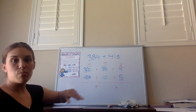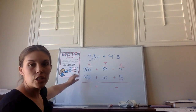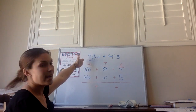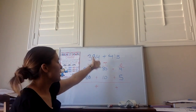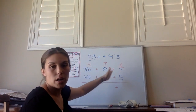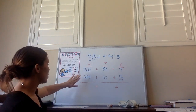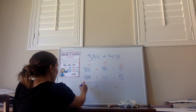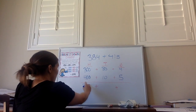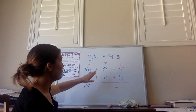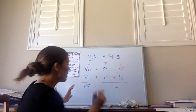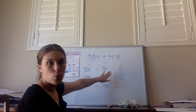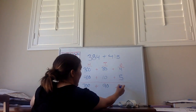Once I've broken up each number into expanded form, this is what it will look like. Our next step is to add the hundreds, the tens, and then the ones. So first I'm going to add the hundreds: 400 plus 300 is 700. Now I'm going to add the tens: 80 plus 10 equals 90. And then I'm going to add the ones: 4 plus 5 is 9.